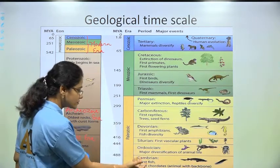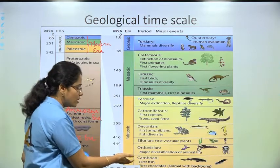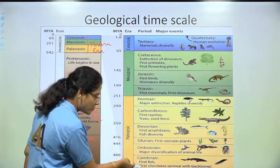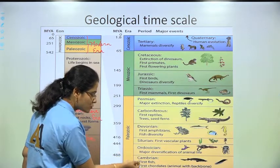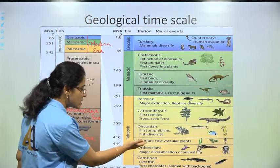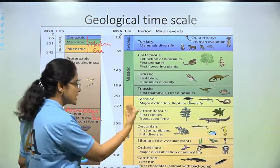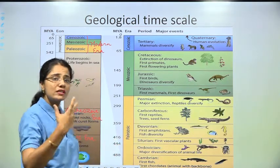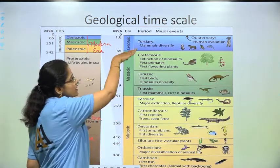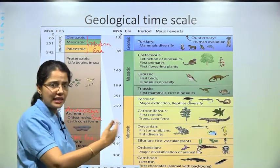For example, in the Paleozoic era there are different periods. In the Cambrian period, fish came into existence, then the quadrate animals. Then came the Ordovician, in which major diversification of animals occurred. Then Silurian, when the first vascular plants came into existence. These various periods tell us which types of organisms existed at each time.